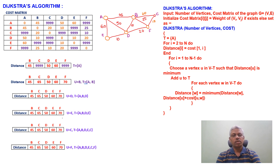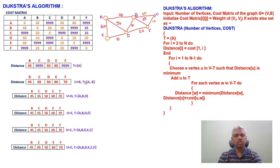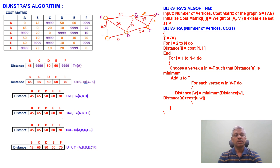The next minimum is 60, vertex e. Remaining vertices are c and f. For c: 65 is still least, not updated. For f: 70 is not updated. Next minimum is 65, vertex c. Only f remains. Via c: a→c is 65, c→f is 10, giving 75 — cannot update 70. Finally, f is added and the algorithm stops.